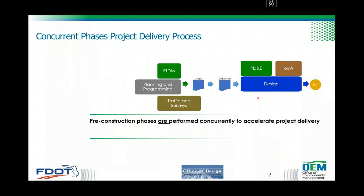If you look at this traditional process, all phases are completed in series. What we realize is that there are some PD&E activities that are repeated during design, and some that should have been done in planning — so there is repetition in this process. The concurrent process moves PD&E and combines it with design, doing both PD&E study and design services together. We use information from planning and ETDM screening to scope the project, then advertise and procure one consultant to do both PD&E and design. After PD&E is approved, the right-of-way phase starts.